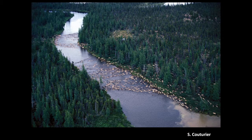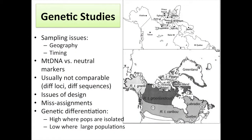Some populations — like the George River herd — were very, very well known, but most have had no data taken from them at all. When really looking at what gets assigned to what at the population or herd level, you run into these kinds of challenges. With genetic studies, we had issues where sampling designs only covered part of the range or had very small sample sizes for other parts of the range. This is hopefully being rectified with larger studies now, but it wasn't in time for this exercise.